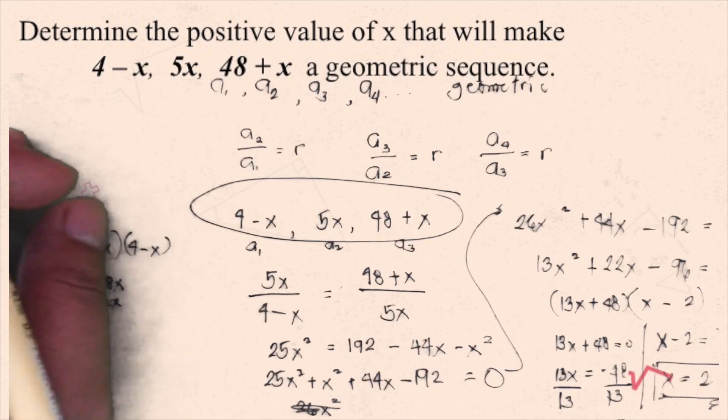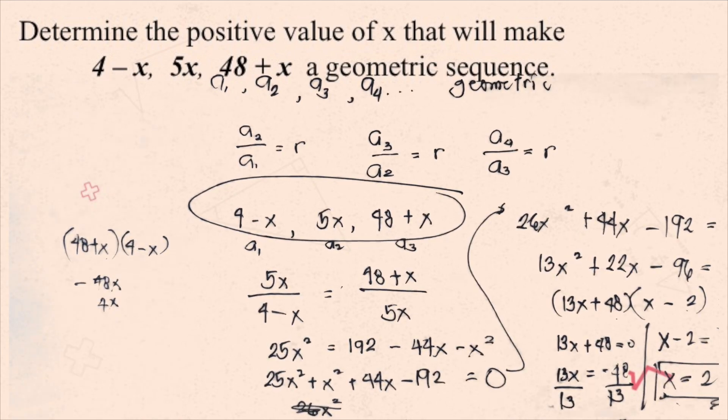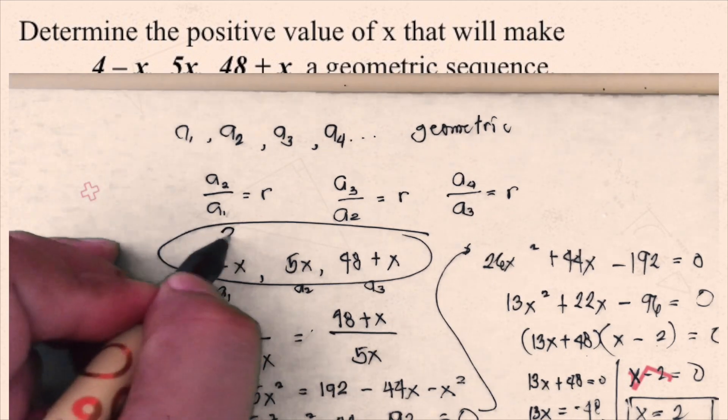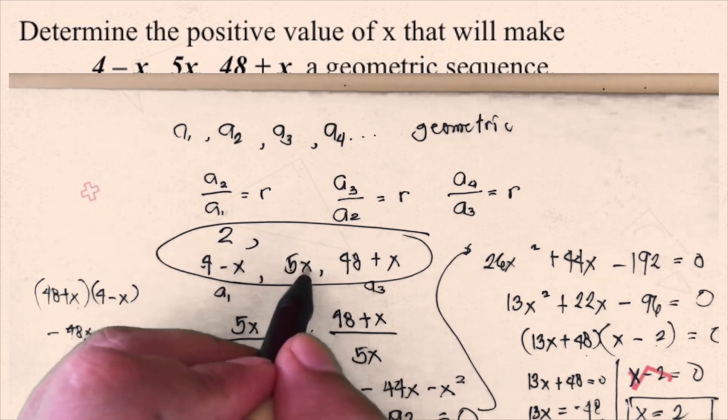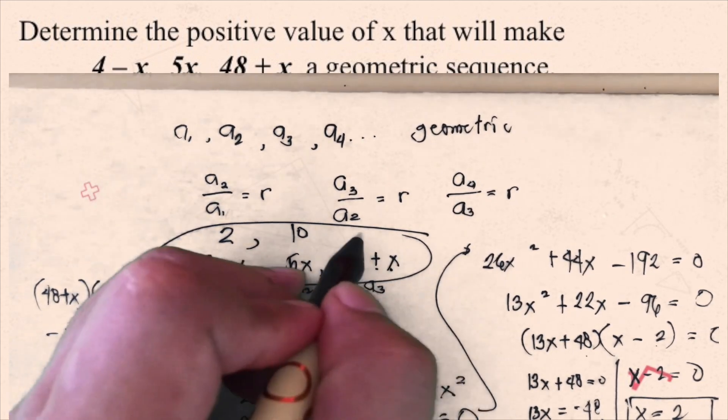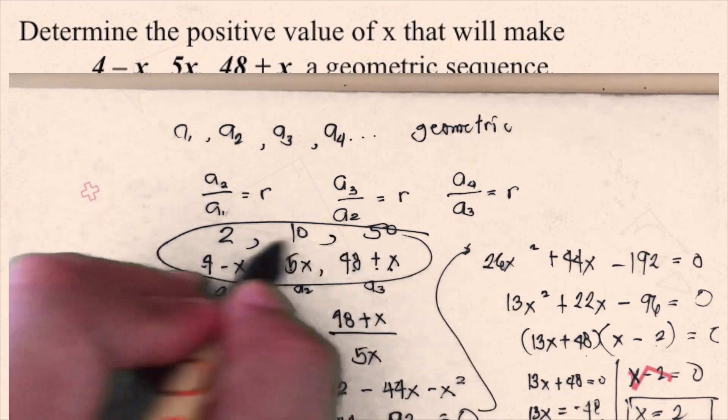So, let's check if this one is really correct by substituting the value of x here in the given. So, if x is 2, 4 minus 2 is 2. And then, 5 times 2 is 10. Then, 48 plus 2 is 50.